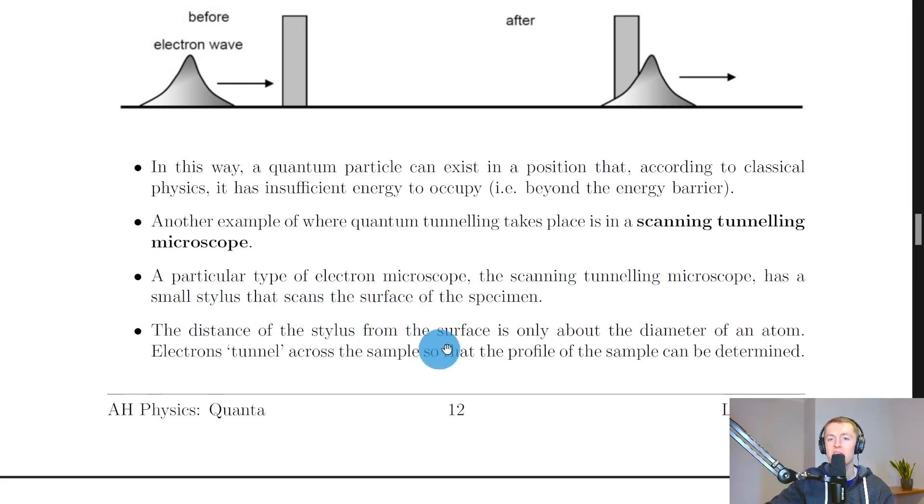The distance of the stylus from the surface is only about the diameter of an atom and the way this works is that electrons tunnel across the sample so that the profile of the sample can be determined.